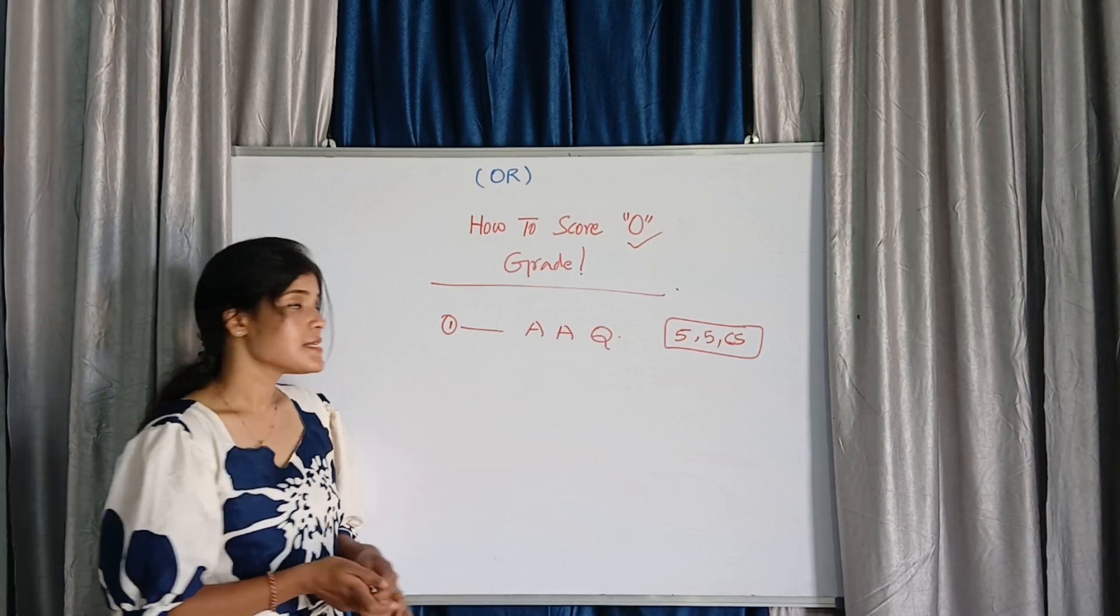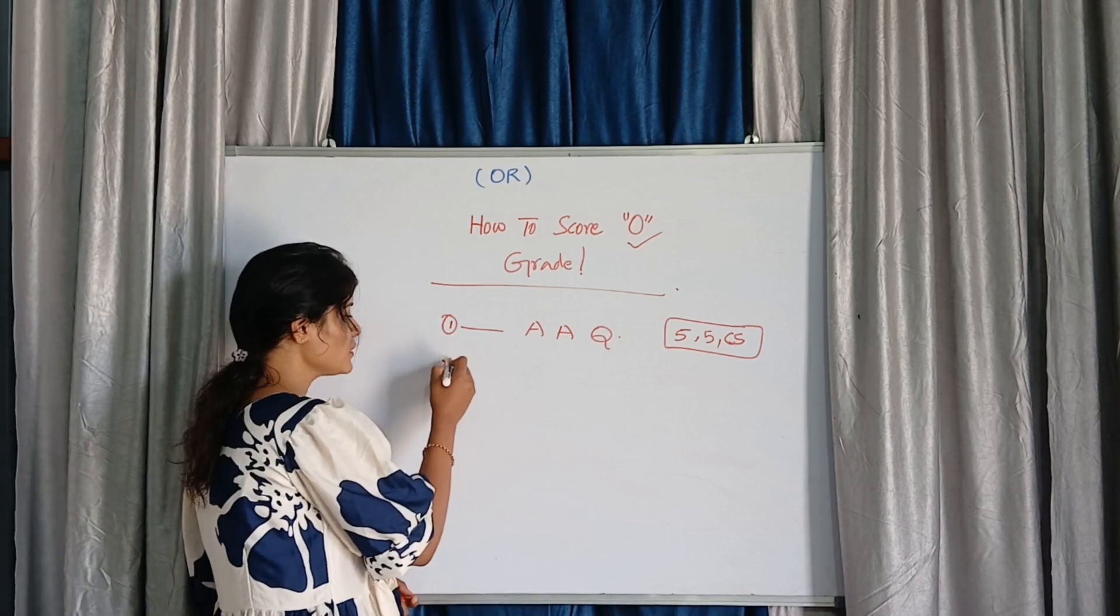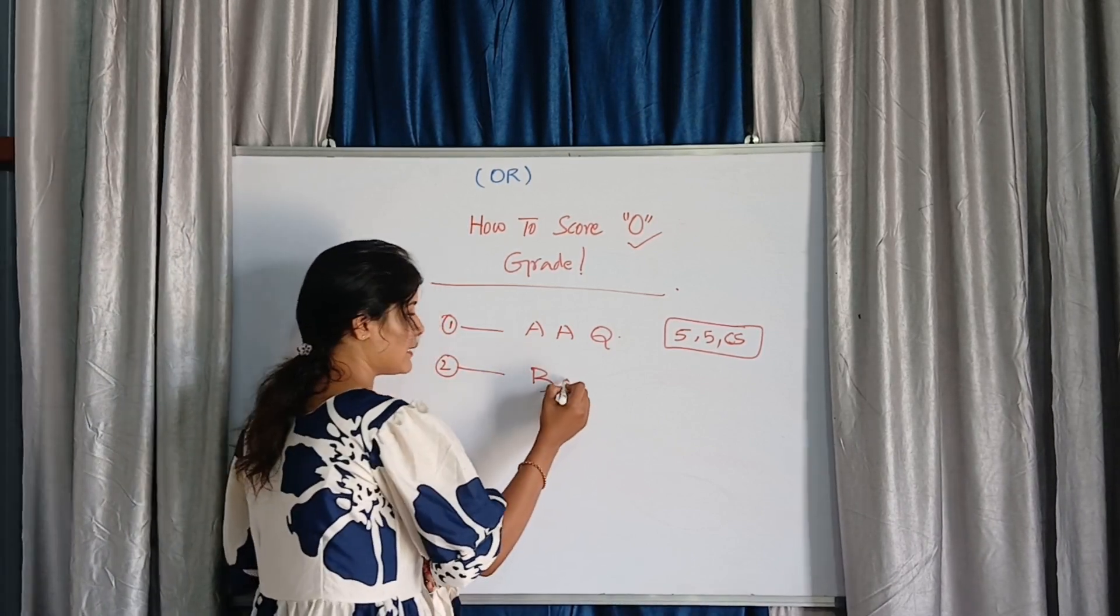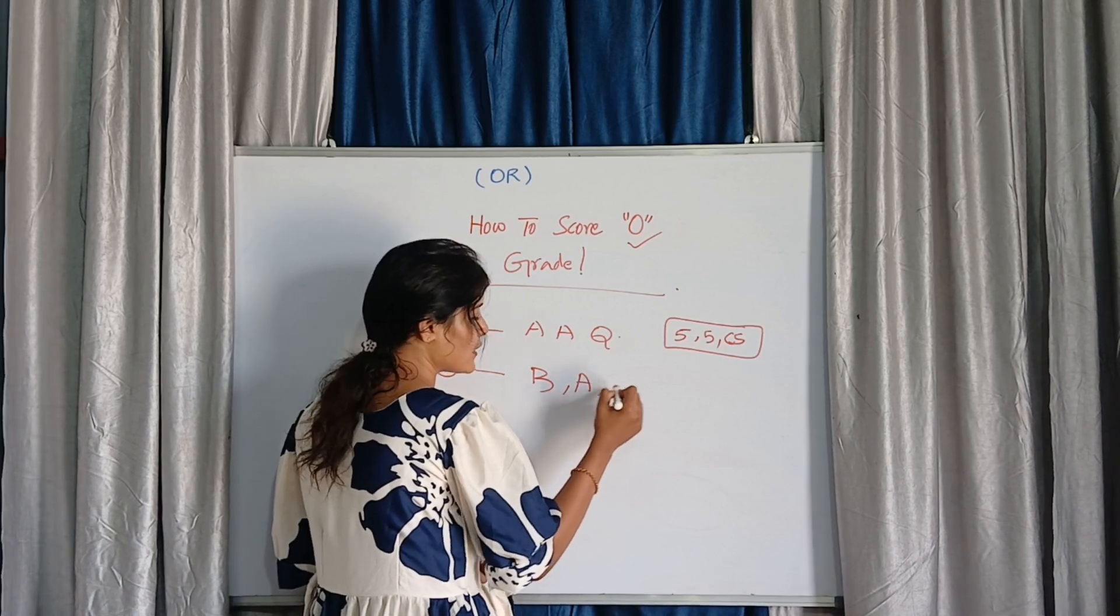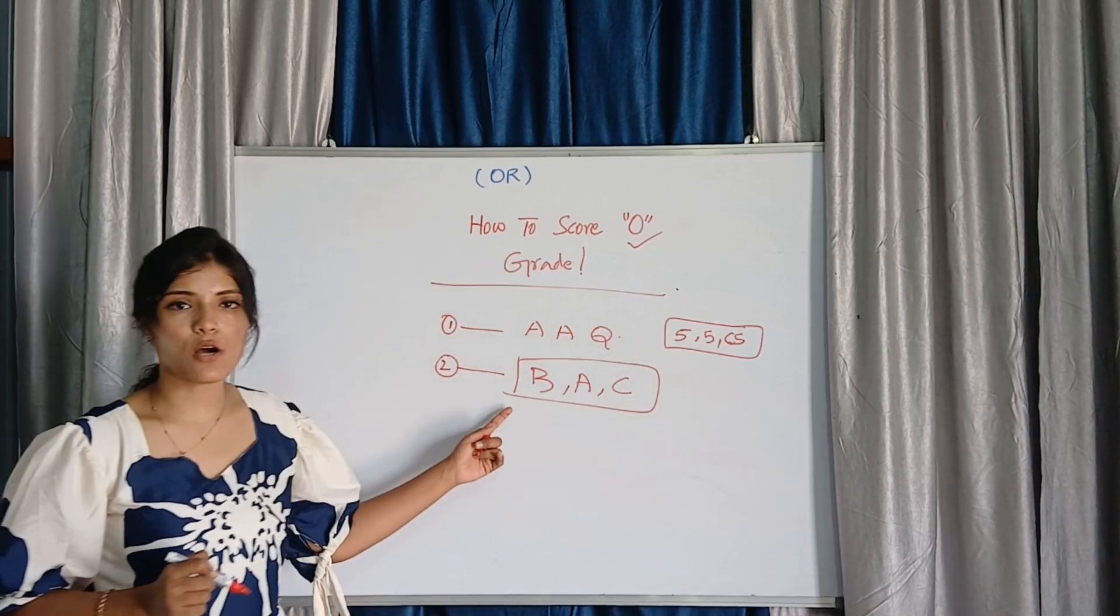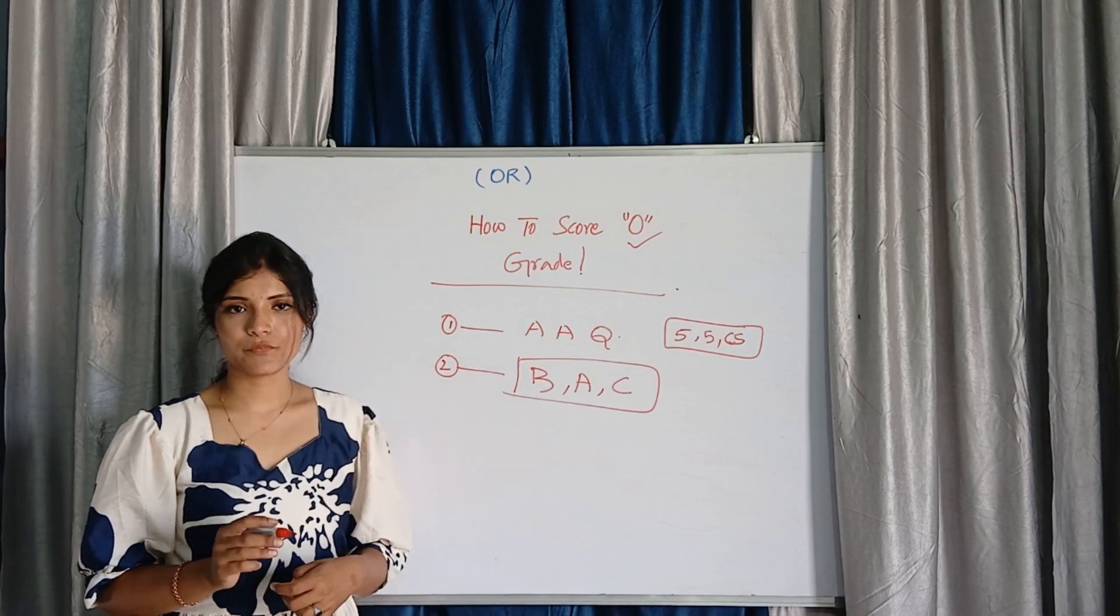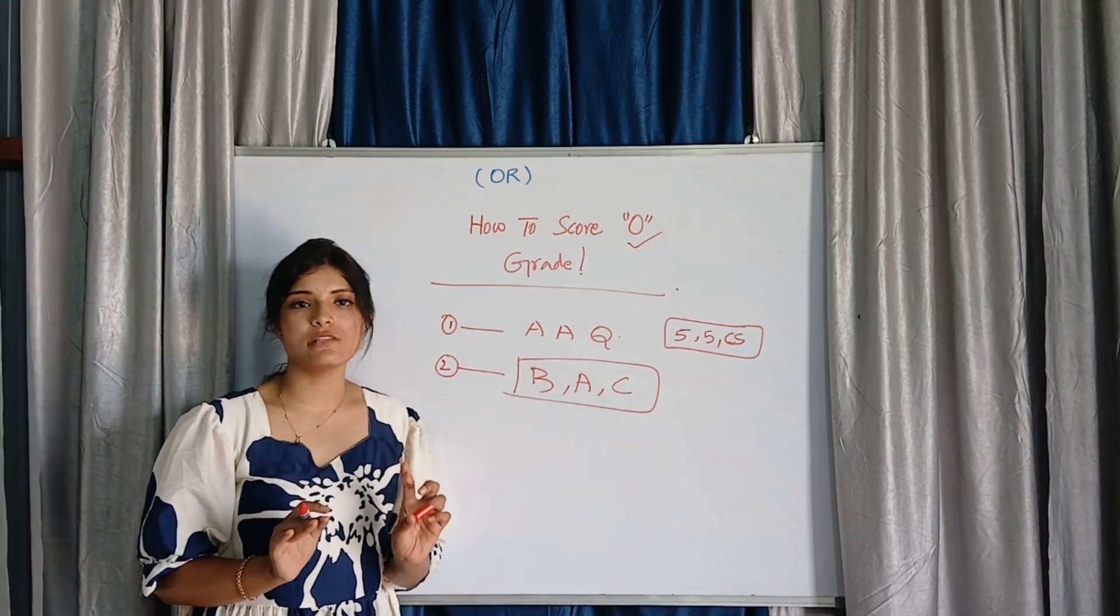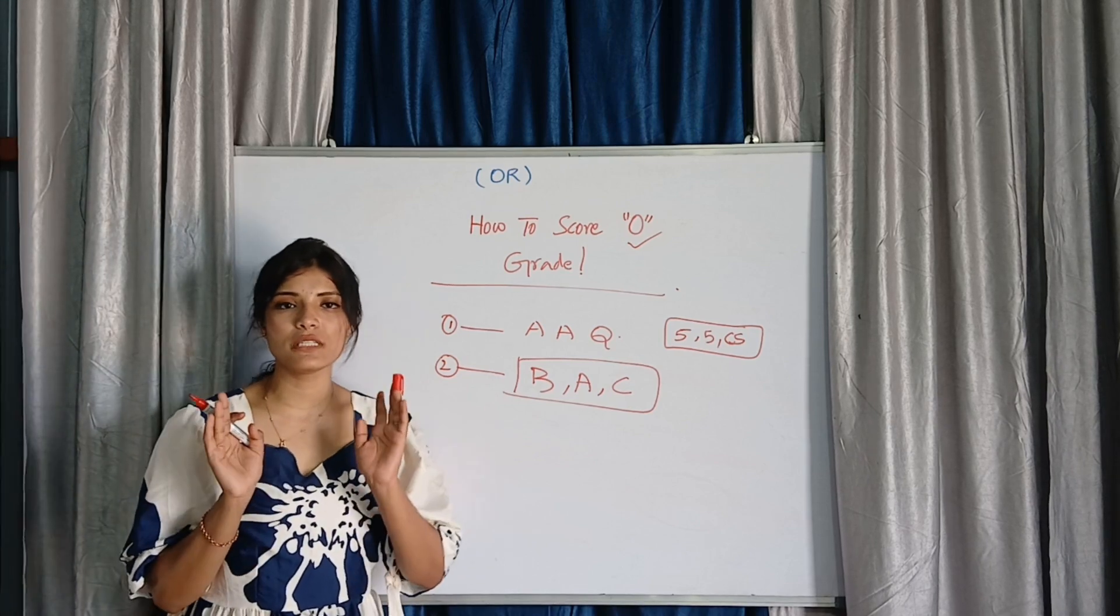Second thing: First attempt part B, then attempt part A, then go with part C. This is the order in which you attempt it. Or else you can attempt part A, part B and part C also if you are perfect and if you know the time management.